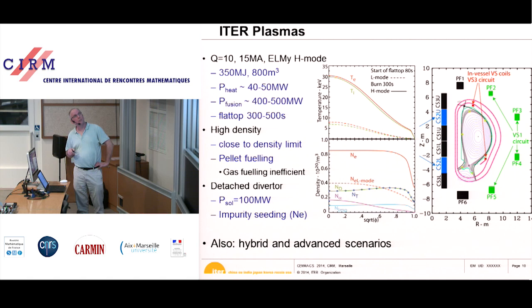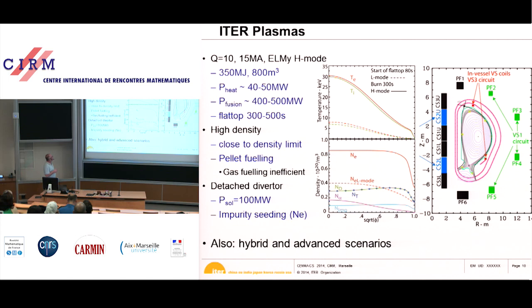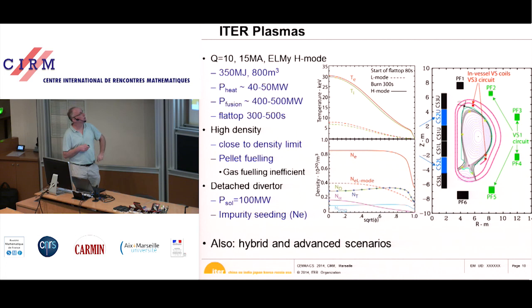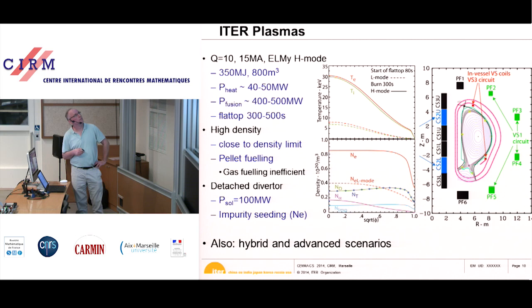The ITER machine is so large compared to present machines that you cannot fuel the plasma by simply injecting gas from a valve, because the gas is ionized before it enters. So ITER will be the first machine to inject pellets — ice cubes of typically 3 cubic millimeters — at high speed of about 300 meters per second, injected from the side at up to 10 hertz frequency. They will reach 10 to 20 centimeters into the plasma and will fuel ITER's plasmas.